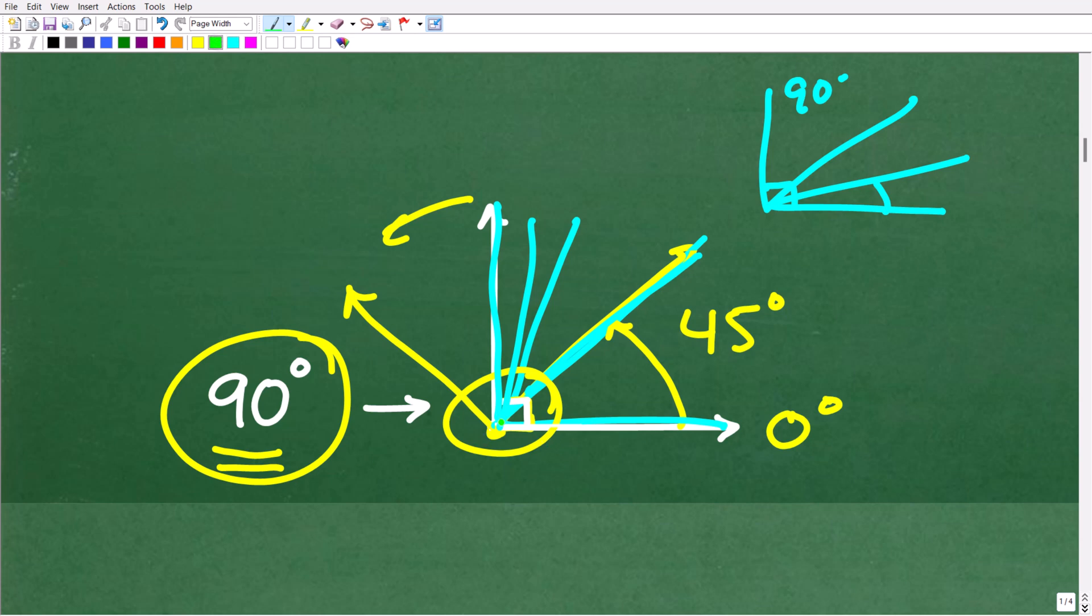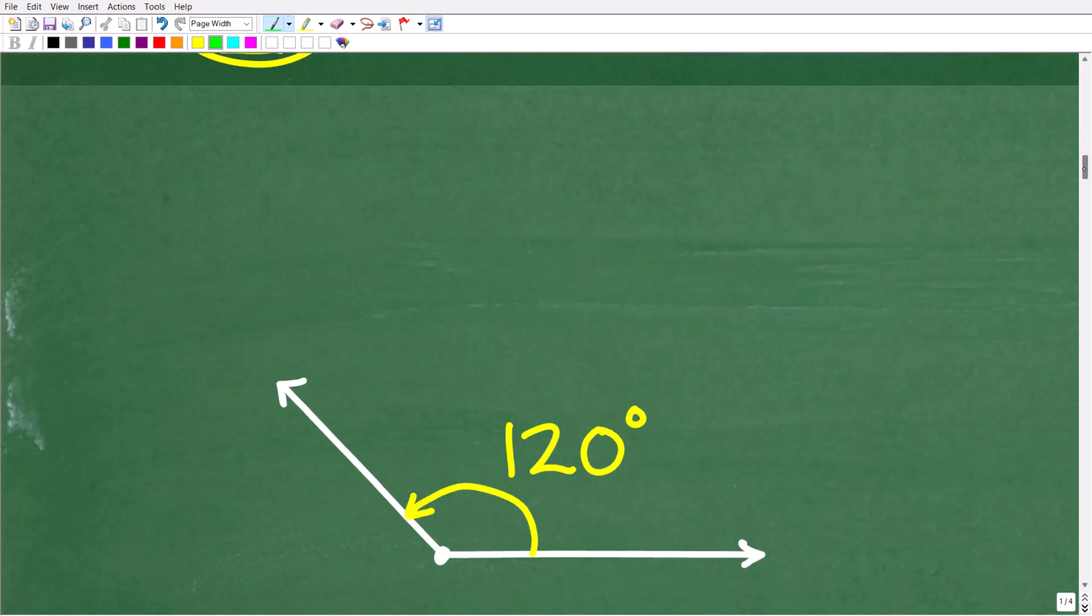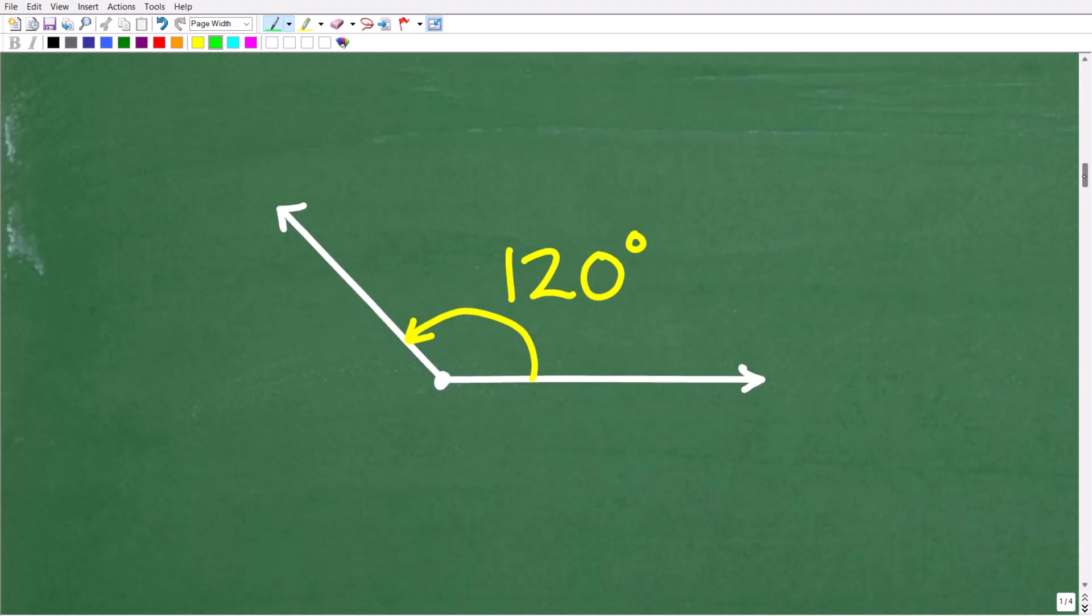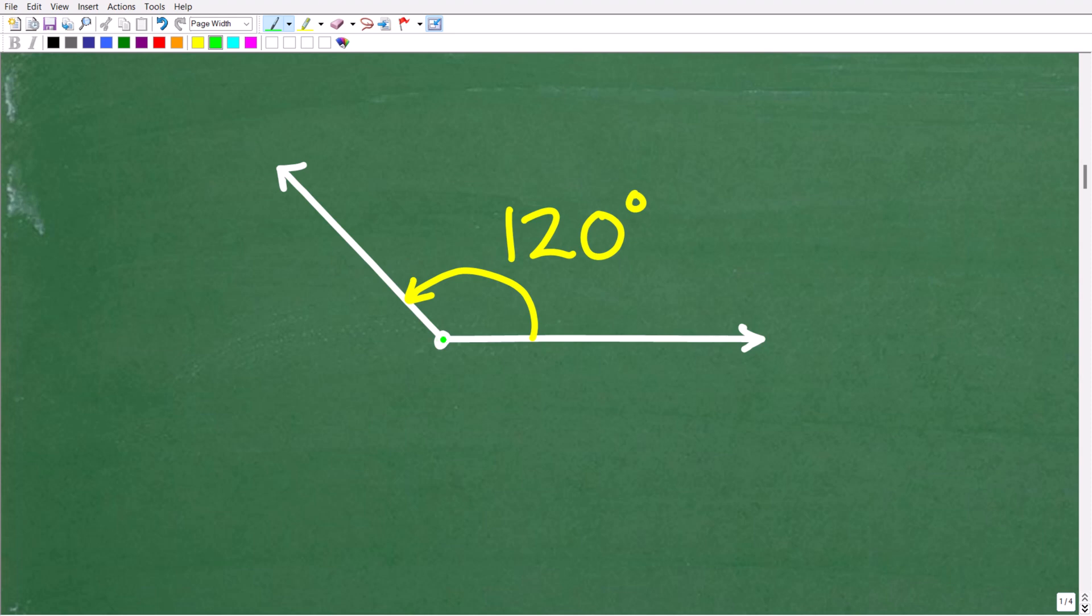But as we continue on, we're getting very wide angles, and these type of angles are called obtuse angles. So this is an example of an obtuse angle right here. Here is our vertex, we start here at zero degrees, we're going to go past 90 degrees, and this would be for example like 120 degrees. So hopefully you're kind of getting the picture here. And this is bigger than 90 degrees. But as we continue to open this up, eventually we're going to get to a straight line.